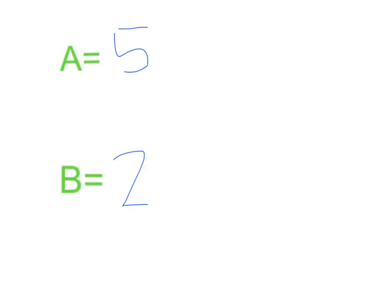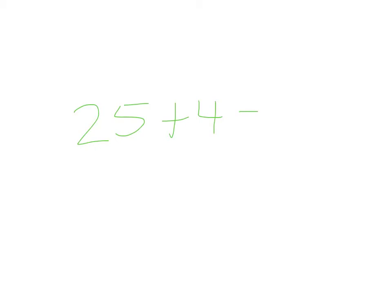But wait — didn't you realize in the equation just a little bit ago that it was A squared plus B squared? A squared: five is twenty-five. B squared: two is four. So, A squared plus B squared equals C squared.